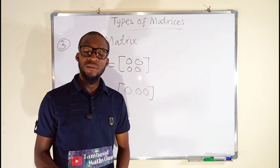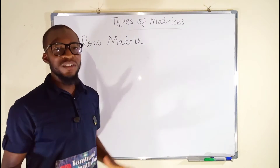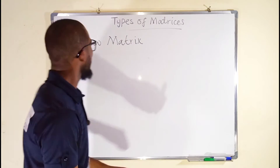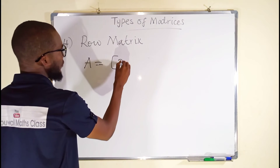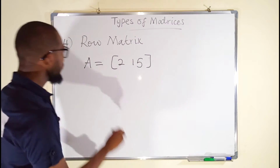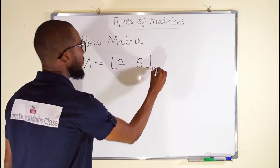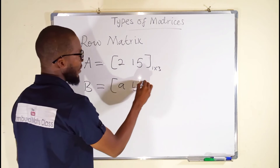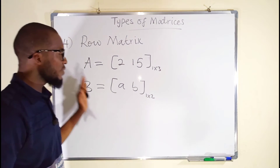A row matrix is a matrix that has only a single row, irrespective of the number of columns in that matrix. For example, if we have matrix A as [2, 1, 5], this is a row matrix because it has only a single row, irrespective of the number of columns — so this is one by three. Another example, [A, B] — you can see this is one by two. It is also a row matrix because it has only a single row.